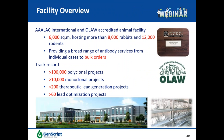Our animal facility is AAALAC and OLA accredited, hosting more than 8,000 rabbits and 12,000 rodents, providing a broad range of animal services from individual cases to bulk orders. We have successfully delivered over 100,000 polyclonal projects, over 10,000 monoclonal projects, over 200 therapeutic lead generation projects, and 60 lead optimization projects. If you have any antibody production need, GenScript is a one-stop shopping place for you.